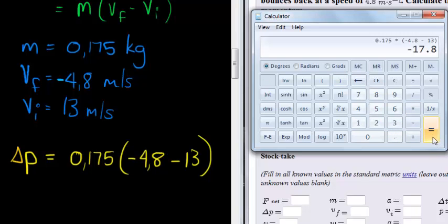Negative 17.8 is equal to, and there we go, rounding to two decimal places, we get negative 3.12.